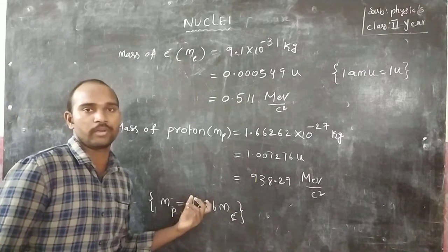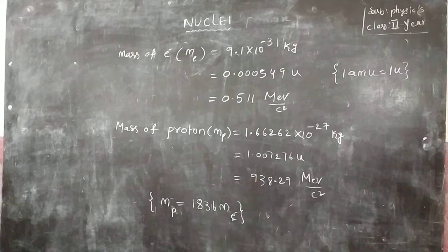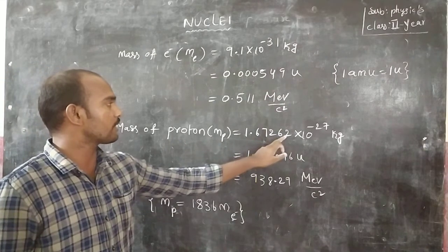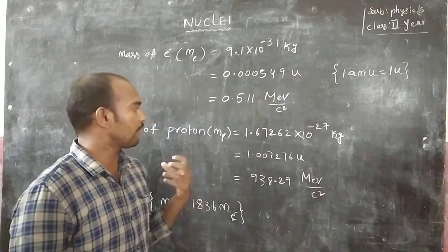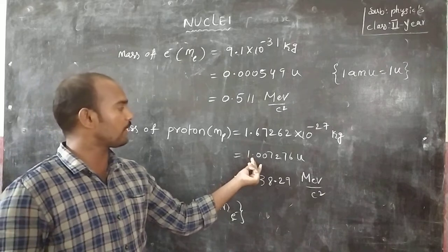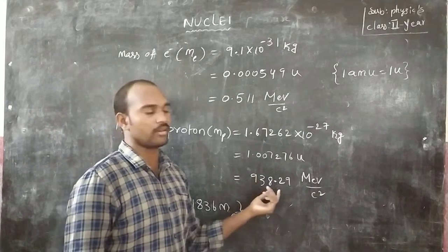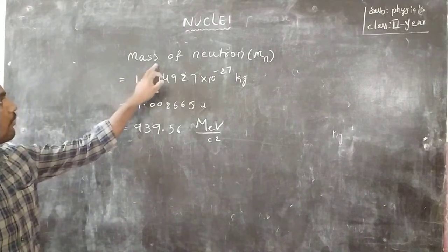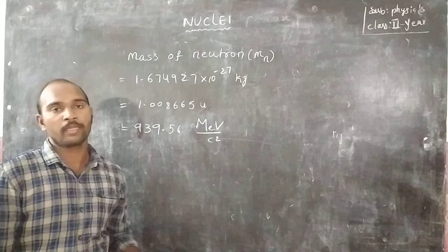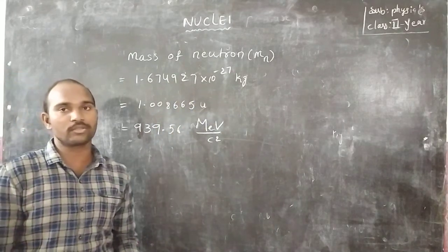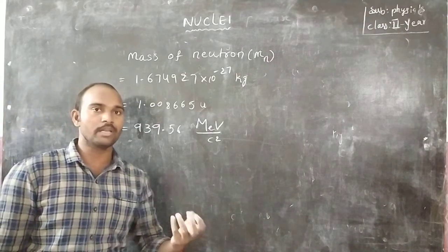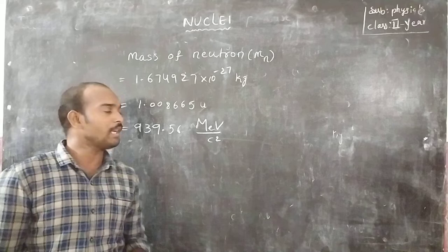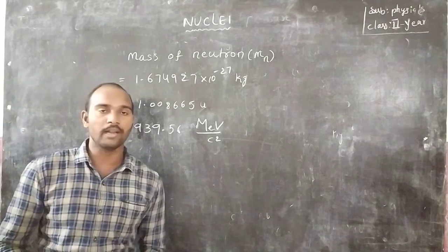The mass of the neutron: MN equals 1.674927 × 10⁻²⁷ kg. In atomic mass units that is 1.008665 u. In energy units it is 939.56 MeV/C². The mass of the neutron is slightly greater than the mass of the proton.